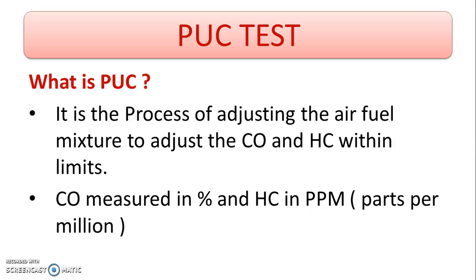Dear students, nowadays air pollution is a major problem in India, and the government has taken great initiatives to reduce the exhaust coming from the IC engine, because these exhausts contain harmful pollutants which are dangerous to the environment as well as to human beings. For this purpose, nowadays BS6 engines are implemented in which a catalytic converter is used. That catalytic converter will convert the harmful gases or harmful pollutants into harmless ones, due to which air pollution will get reduced.